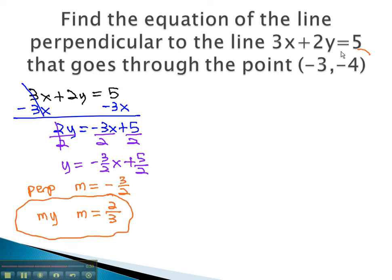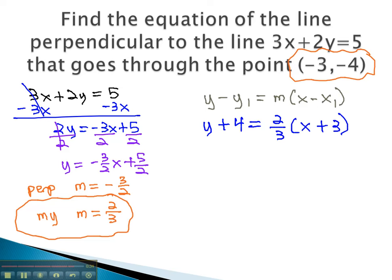Using my slope and the point we want to hit on the line, we can find our equation from y minus y1 equals m times x minus x1. Plugging in our key information, y minus negative 4 becomes plus 4, equals 2 thirds times x minus negative 3, becomes positive 3.